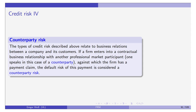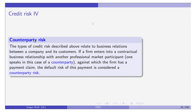Counterparty risk is usually not that important in the insurance business because of reinsurance — it's highly unlikely that an insurance company will default. However, it is very important in the trading of credit default swaps, especially because it is OTC — over the counter — and also very important with trading partners in energy trading.